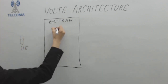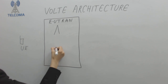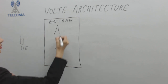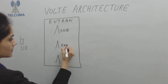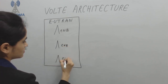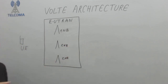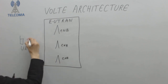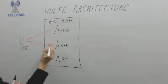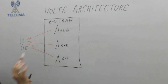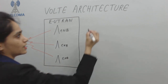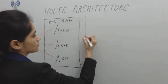The User Equipment is attached to the E-UTRAN part via an eNodeB. There is a connectivity between the UE and the eNodeB. Next, we require the Core Network.